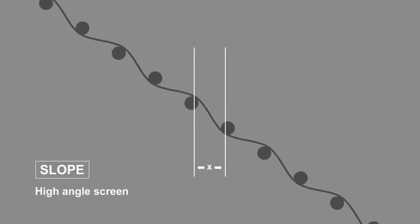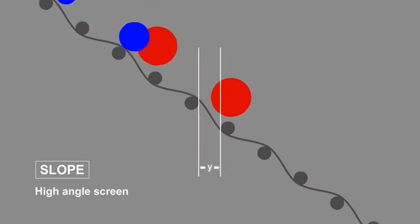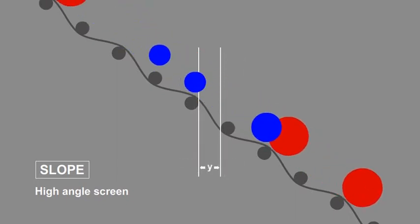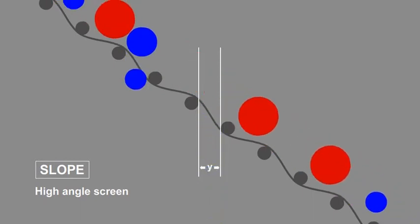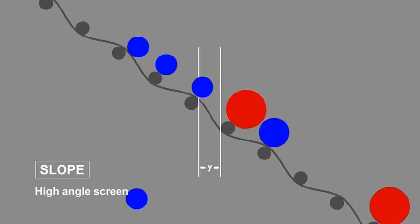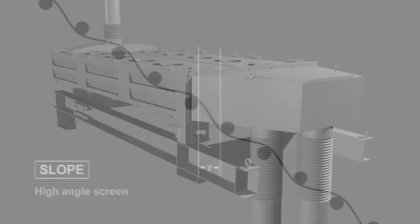On a high angle screen, the aperture seen by the particles is reduced, thereby causing some particles that are close to the size of the actual mesh aperture to pass over the screen, which results in a loss of efficiency. A low angle screen will provide more precise separations than a high angle, which means less product loss in the screening process and a higher return on investment.